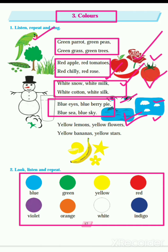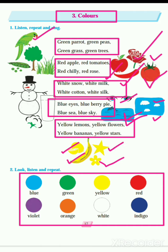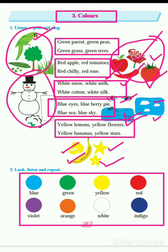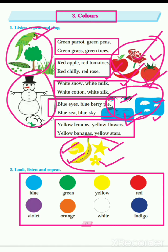So first we have seen green, then red, then white, then blue. Now we are going to see the last color. Yellow lemons, yellow flowers, yellow bananas, yellow stars. You can see these in the pictures. These things are of yellow color. So we have seen five colors: green, red, white, blue, and yellow.